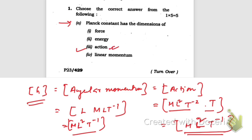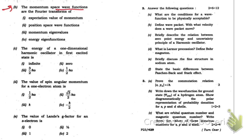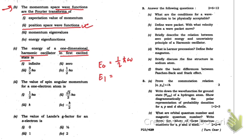Next question: momentum space wave functions are the Fourier transforms of position space wave functions — that is the answer. For the energy of a one-dimensional harmonic oscillator in the first excited state: E_n = (n + 1/2)ℏω. In the ground state (n=0) it is ½ℏω; in the first excited state (n=1) it is 3/2 ℏω.